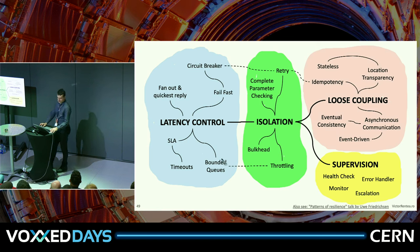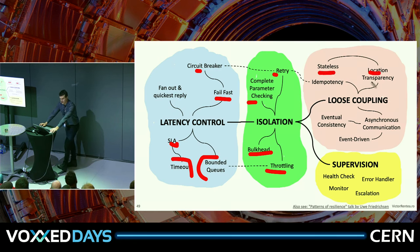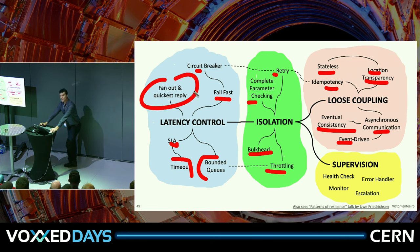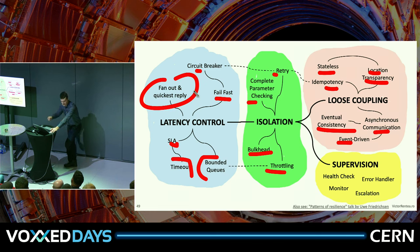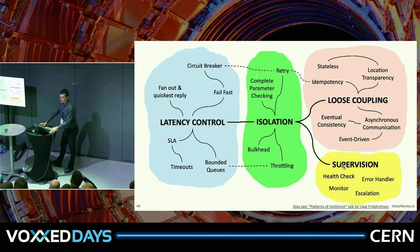Latency control patterns covered: bounded queues, timeouts, service level agreements, fail-fast principle, circuit breaker, retry, checking input as soon as you see it. Bulkhead: cutting boundaries around stuff that should work alone. Throttling: artificially restricting load for better performance or stability. Stateless services, location transparency, load balancing, idempotency, eventual consistency, messages and events. In some mission-critical domains, it's cheaper to fire multiple requests at the same time for the same goal and have the fastest response win.